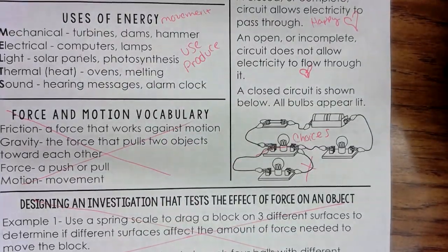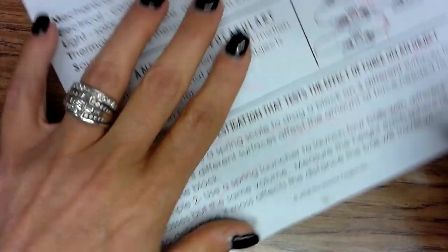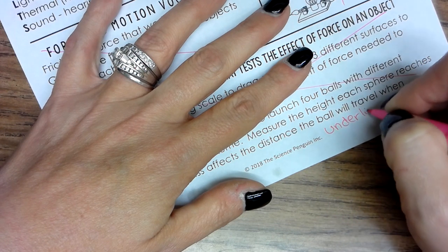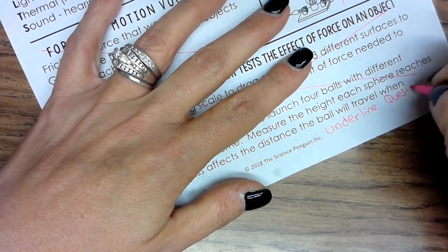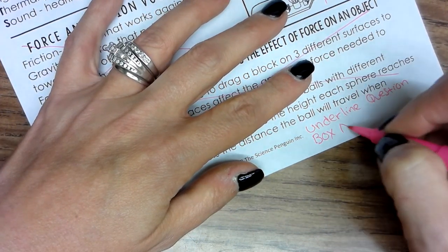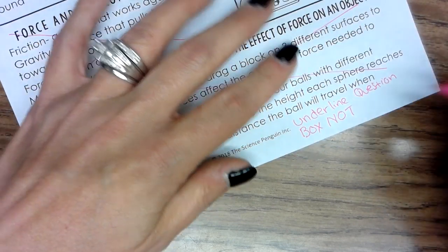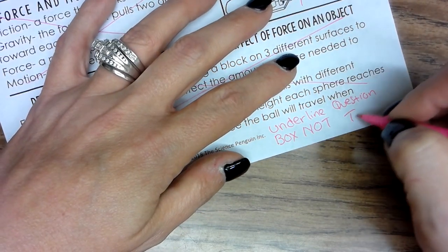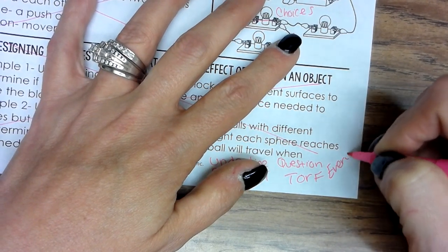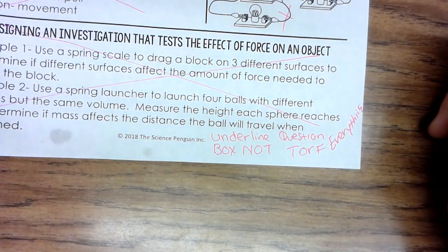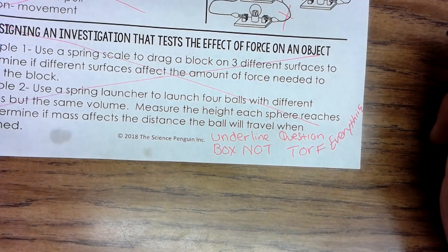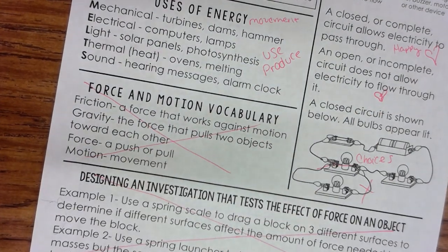Y'all gonna do awesome on this. Here are a couple things I want you to write down: underline question, box 'not', and last but not least, true or false everything. Underline question, box 'not', true or false everything. Peace, you got it.